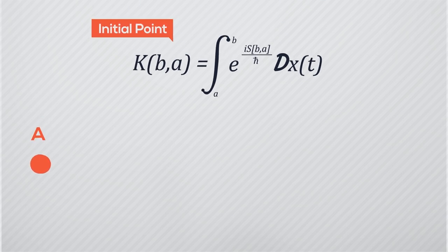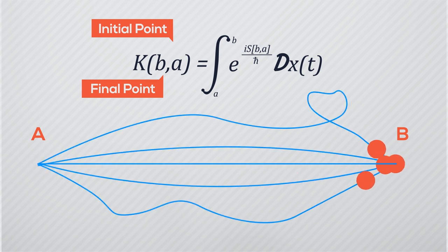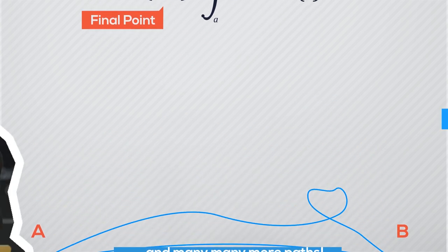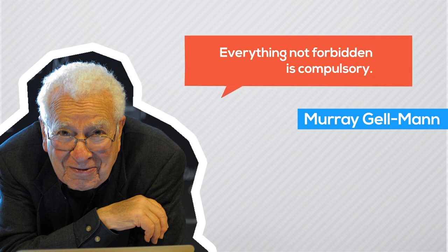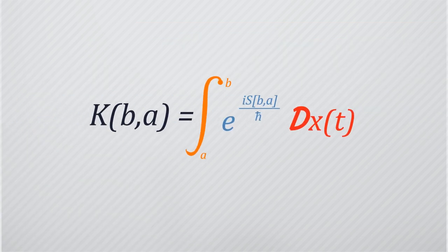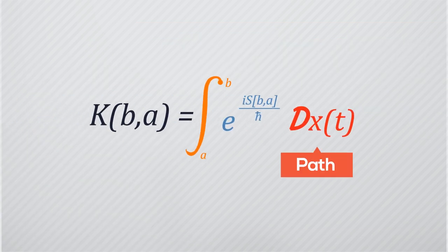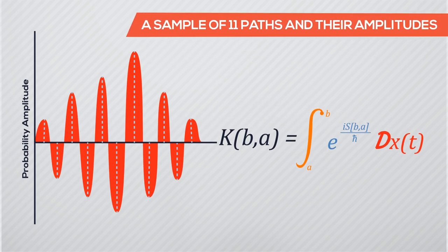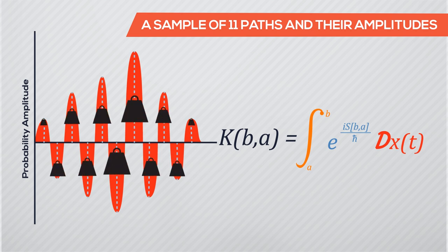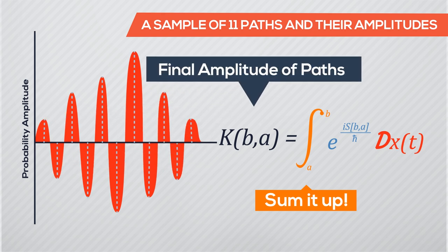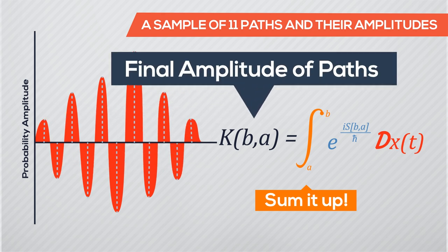You have this point particle at A. To calculate its probability of arriving at B, you have to consider all of the possible paths in space and time between A and B. As Murray Gell-Mann said, everything not forbidden is compulsory. But each compulsory path doesn't have an equal probability of getting taken. In this equation, we have each path multiplied with a block which indicates that path's probability amplitude. So if a path has a greater probability amplitude, its weight is greater. Then you sum all of these up, and the paths with greater amplitudes have a greater contribution to the final sum of paths.